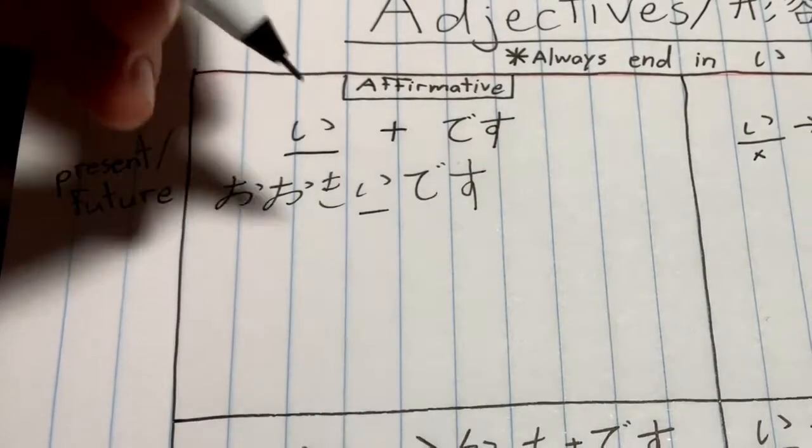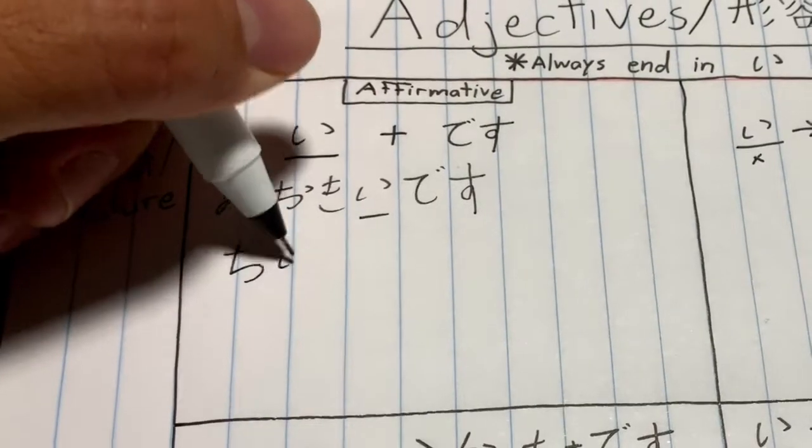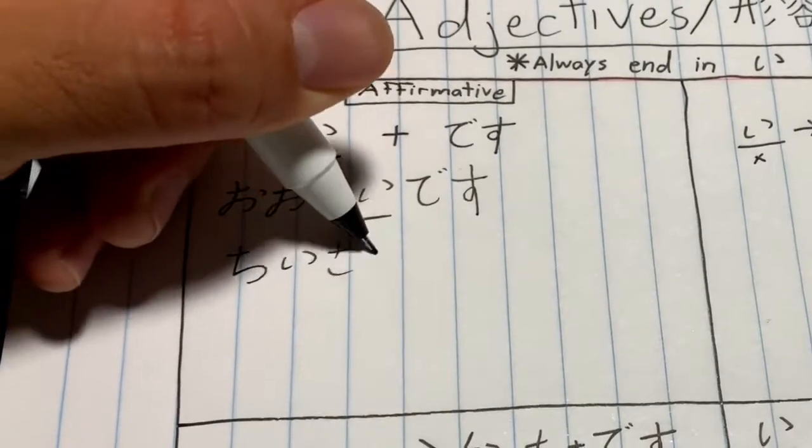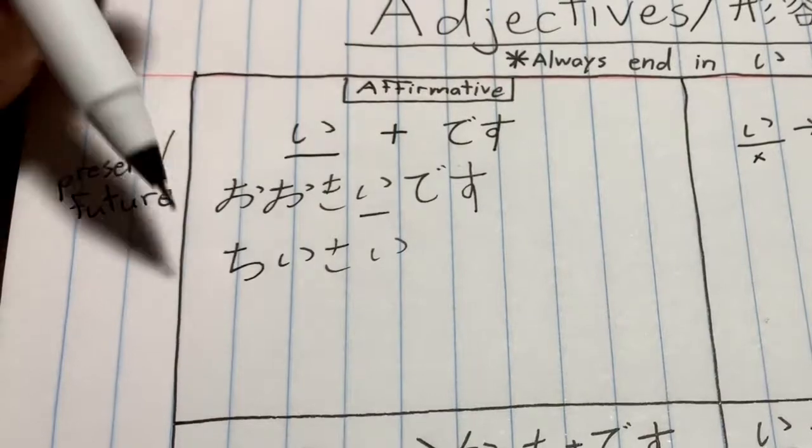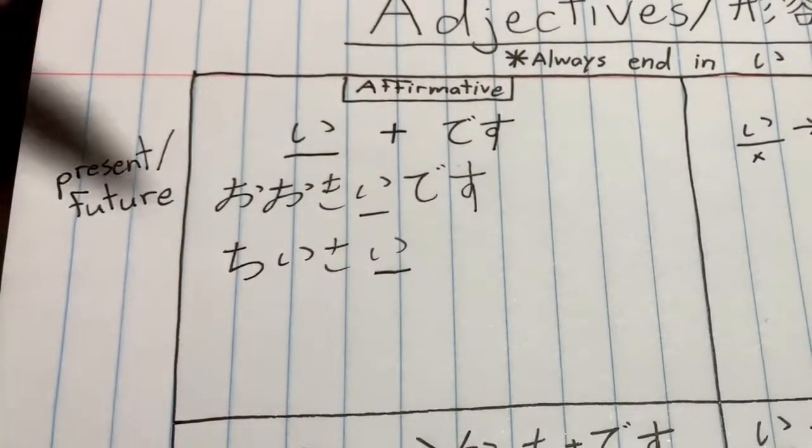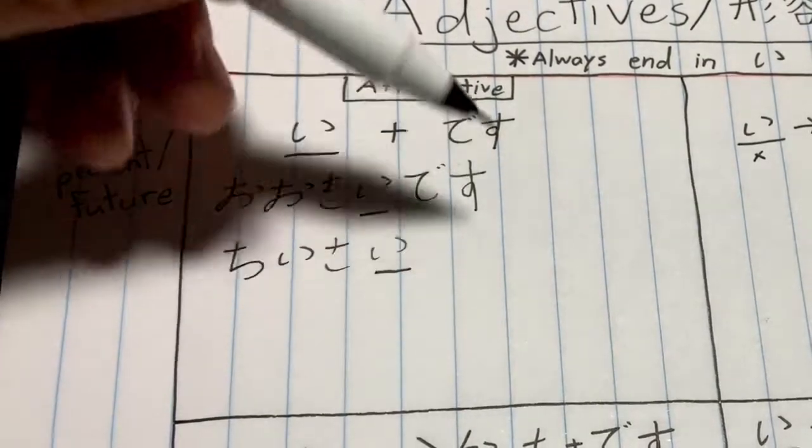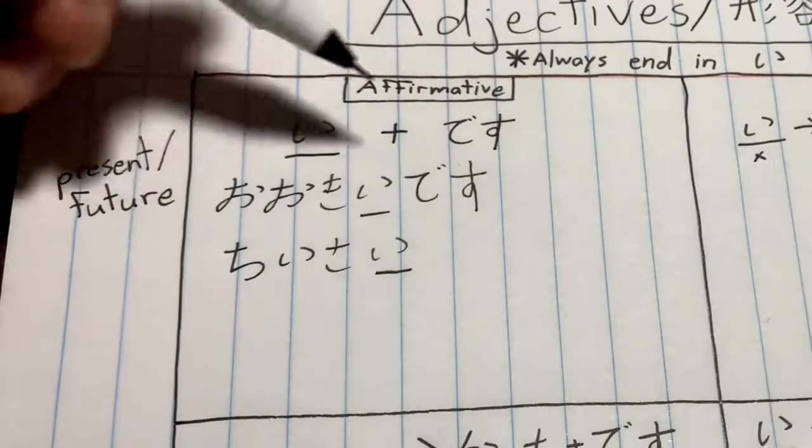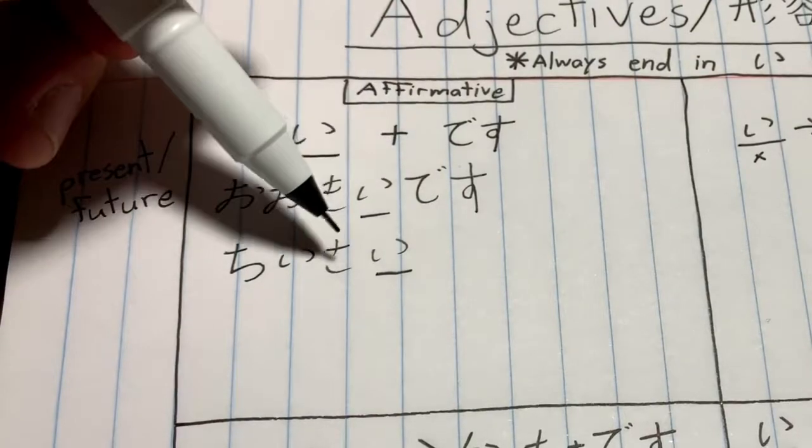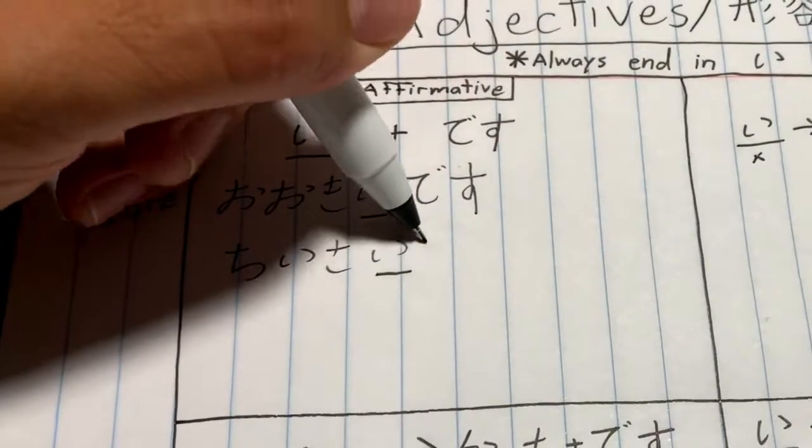Now we can take the next one, which is small, which is 小さい (chiisai). Again we see the 'i' here, so we know it is an adjective. To complete the sentence or the phrase, we just add です (desu), so 小さいです (chiisai desu) means 'it is small' or 'it's small.'